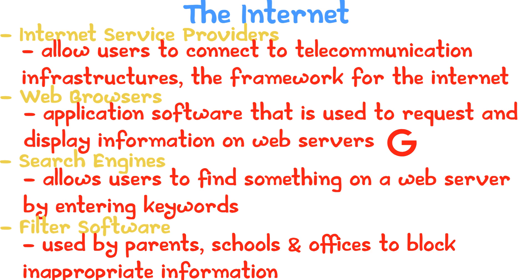If the link is on the blacklist, then the user will not be able to access it. If it is on the whitelist or not in any list, then the user will be able to view the information.